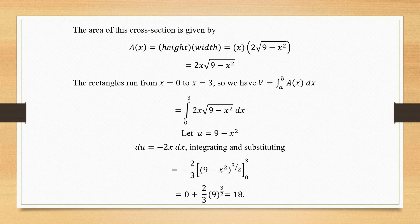The area of this cross section is given by A(x) = height × width. The height of that rectangle is x, and the width is 2√(9 − x²), so A(x) = 2x√(9 − x²). The rectangle runs from 0 to 3 since it lies perfectly within the radius of the circle and x cannot extend beyond 3. Therefore the volume V = ∫₀³ A(x) dx = ∫₀³ 2x√(9 − x²) dx.